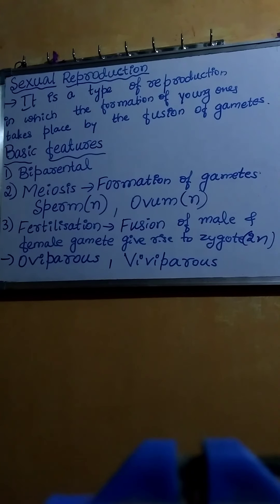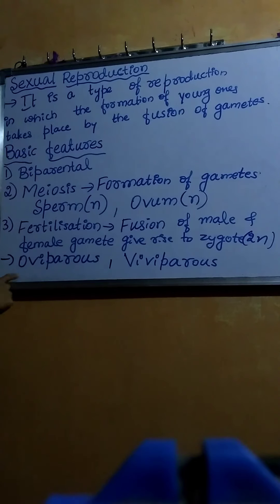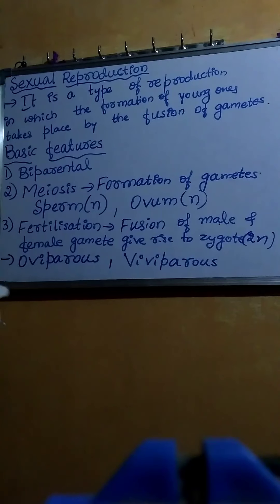Sexual reproduction also leads to the development of variations. Variation is nothing but the degree by which an offspring differs from its parent — the morphological and physiological differences between the young ones and the parents. These are the important basic features of sexual reproduction.